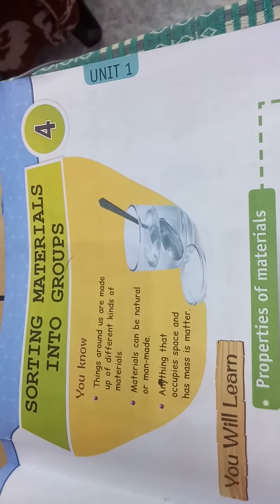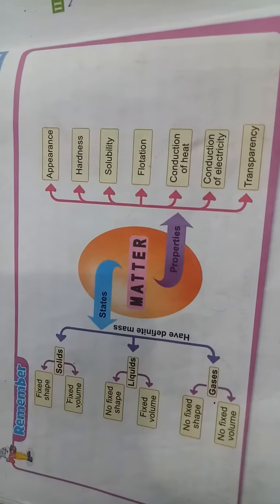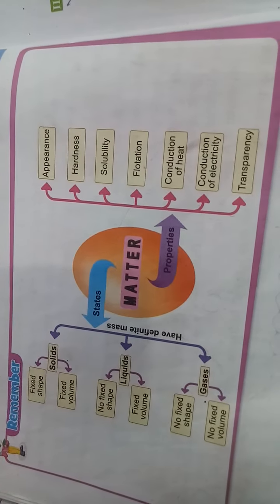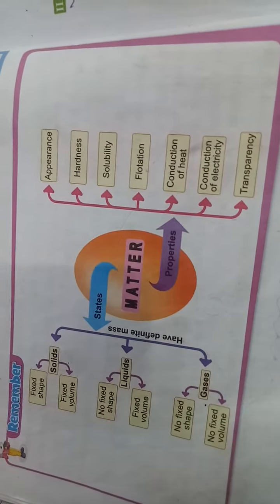Chapter 4: Sorting Materials into Groups. What is matter made of? Matter is made up of molecules. Which of these materials is hard, lighter than water, and does not contain dissolved salts? Wood. Which of these materials is heavier than water and transparent but breaks easily? Glass. Which of these liquids is immiscible with water? Coconut oil.